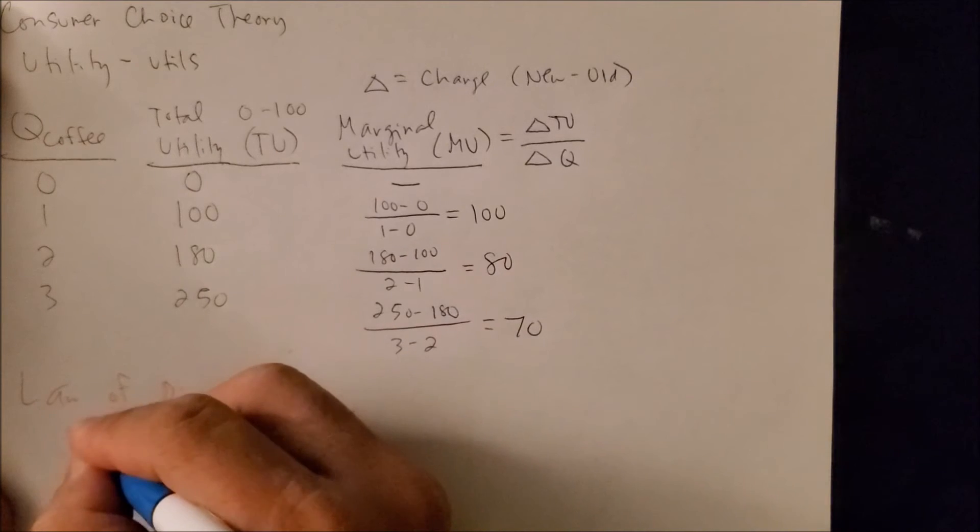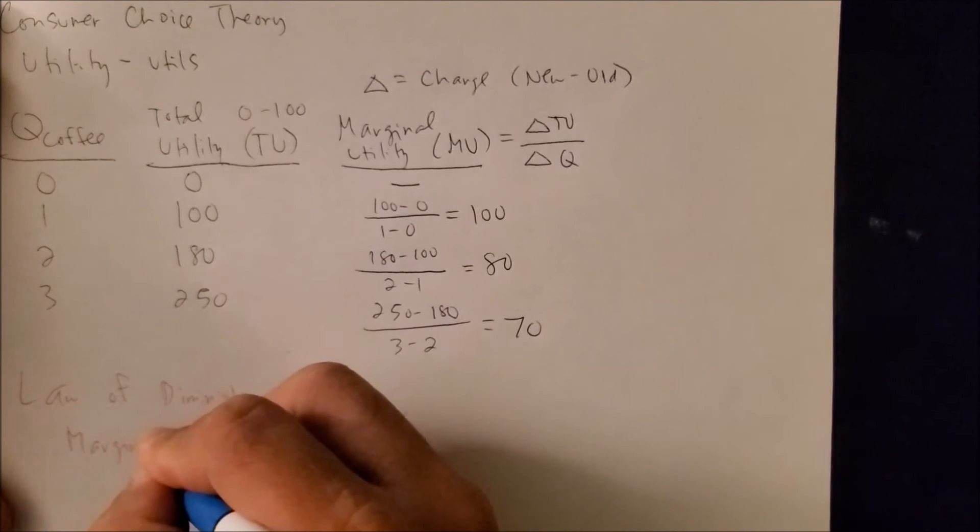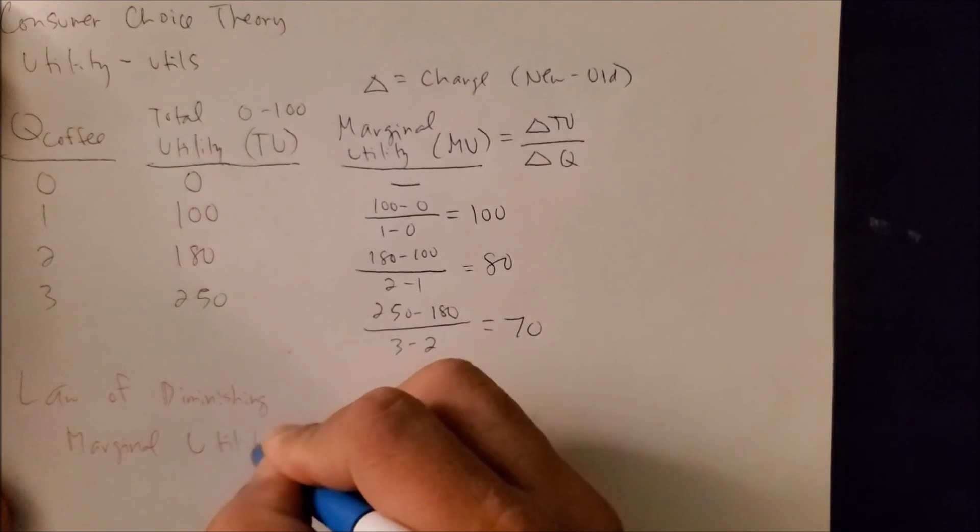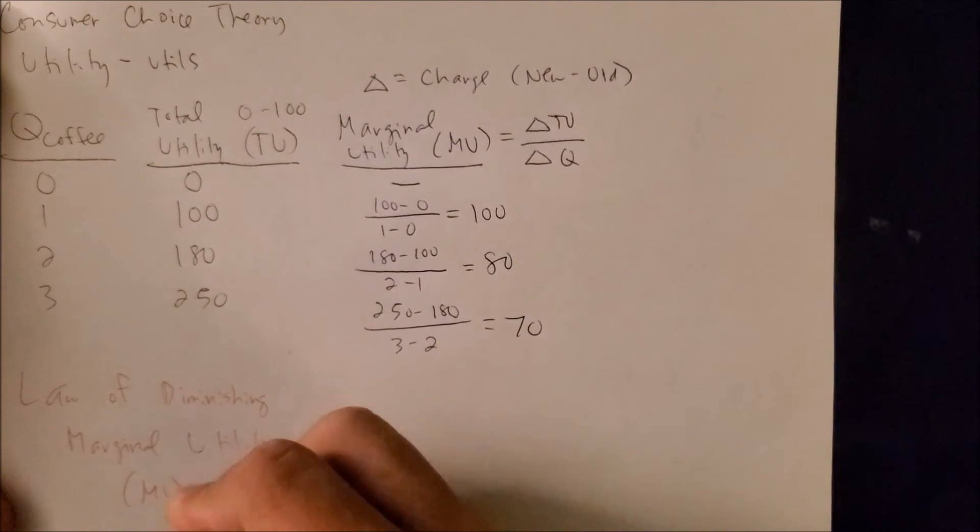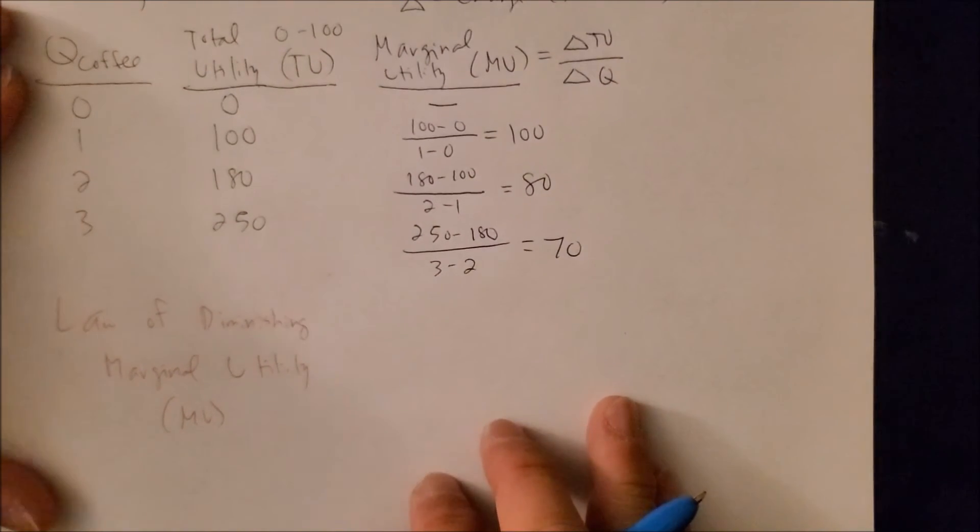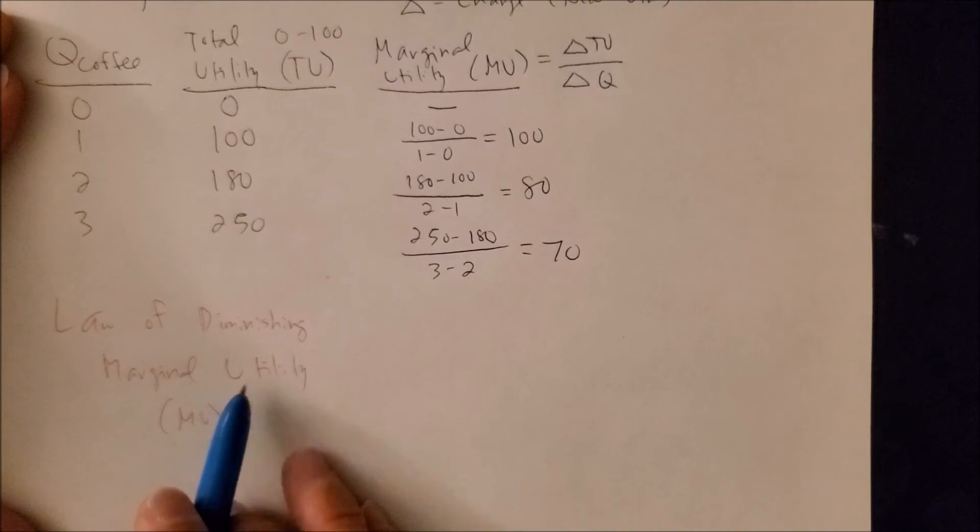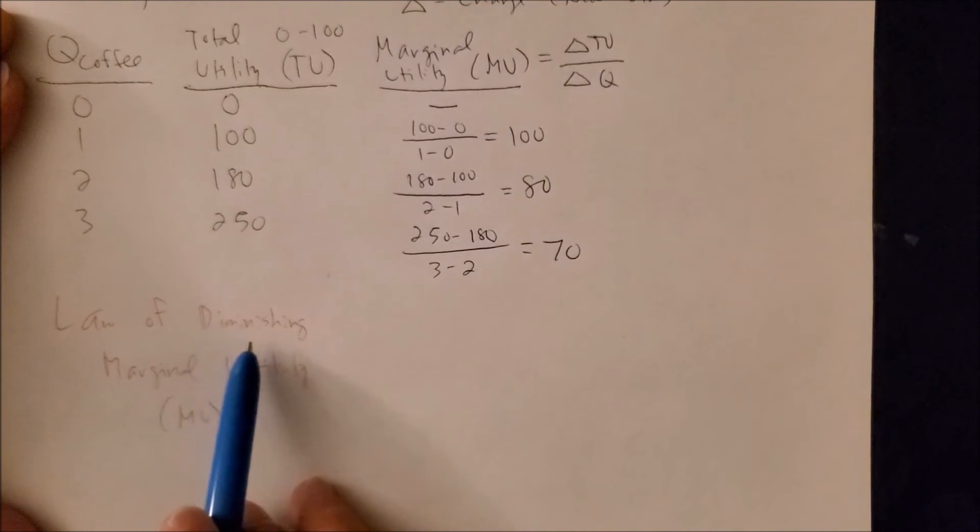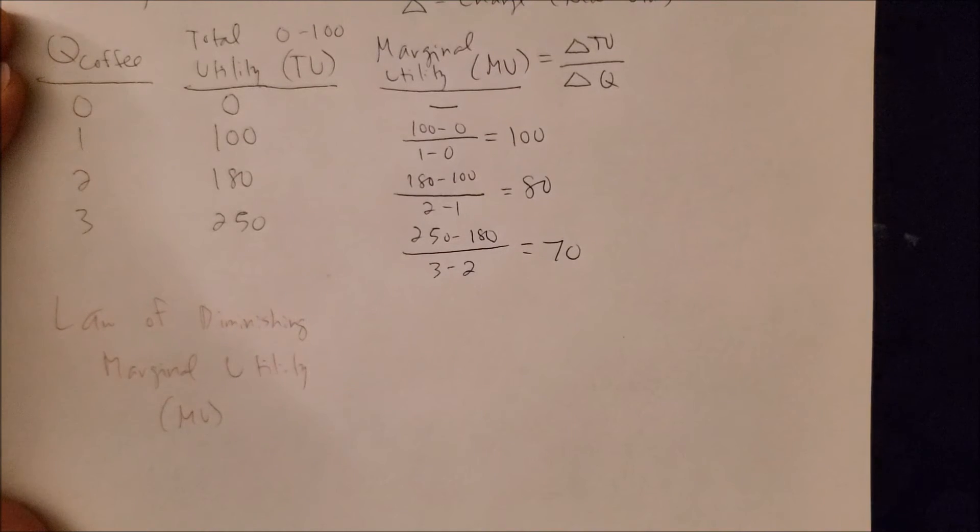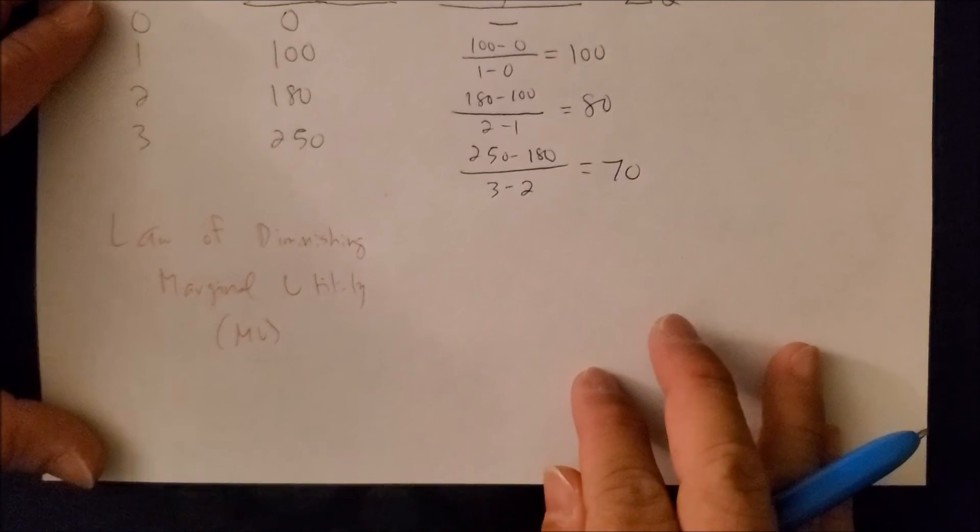And we can call this the law of diminishing marginal utility, the MU. And this law states that as you consume one more of something, the satisfaction will diminish over time. And there are a lot of examples you can use today to kind of illustrate that.